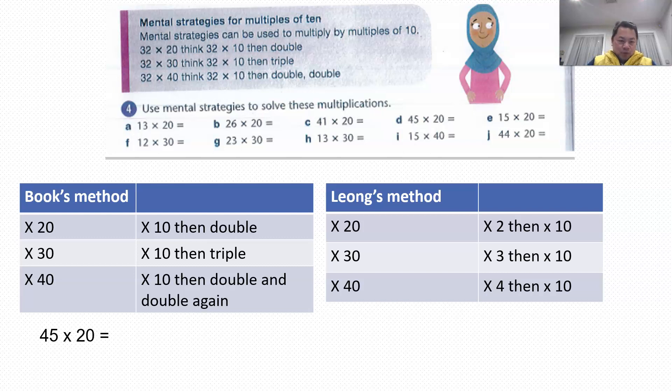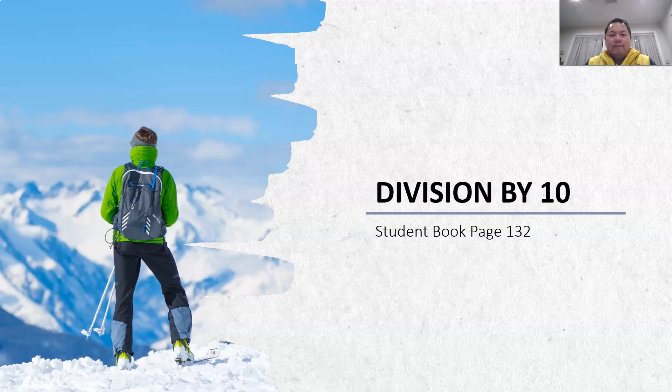So for example, 45 times 20. So it'll be 45 times 2 times... So 45 times 10, which is 450 times 2, which is 900. My method will be 45 times 20 will be 45 times 2, which is 90 times 10, which is 900. So I leave it to you to decide which is the method that you're going to use to answer these questions in the book.